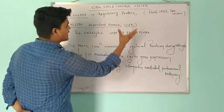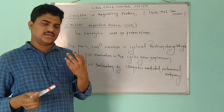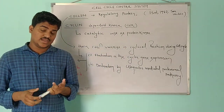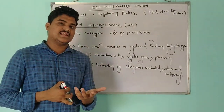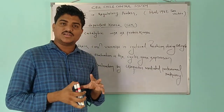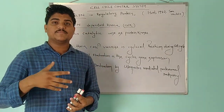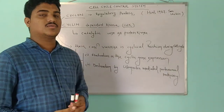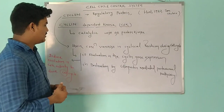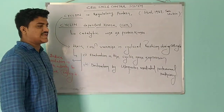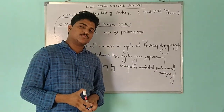CDK is the catalytic unit which acts as a protein kinase. Cyclin was first discovered by Hunt in 1982 while studying the cell cycle in sea urchins. The name cyclin is given to this protein because their synthesis and degradation occur in the cell cycle in a sequential manner — their concentration varies in a cyclical fashion. This is due to two things: fluctuation in cyclin gene expression, and destruction of cyclin protein by the ubiquitin-mediated proteasomal pathway.